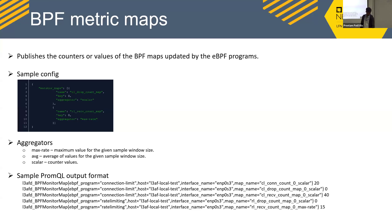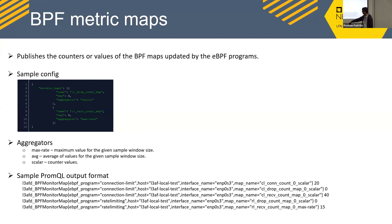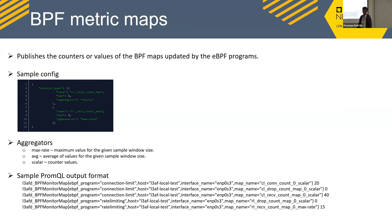The metrics output is visible at endpoint 8898 — you can curl it and get metrics showing which eBPF program is running (e.g., connection limiting or rate limiting), the hostname, which interface it runs on, the map name, and the current value. Health metrics are also exposed in a similar format, indicating whether each BPF program is running or not.